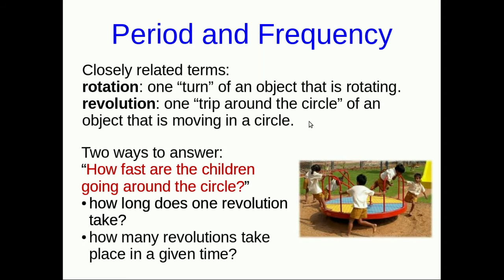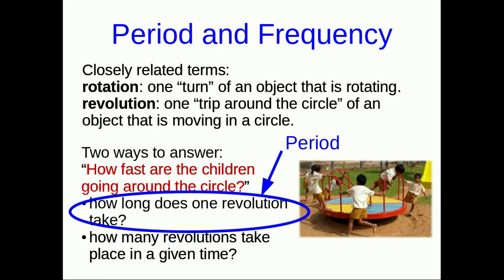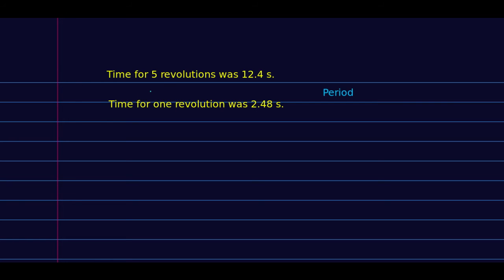And now, clearly, for one revolution, it must just be a fifth of that. My time for one revolution is just 12.4 seconds over five, which my calculator informs me is 2.48 seconds, where again, that eight probably has some significant uncertainty associated with it. So that's one way to answer this question, how fast are the children going around the circle? You say, how long one revolution takes? And we have a word for that. That's called the period of the revolutions.